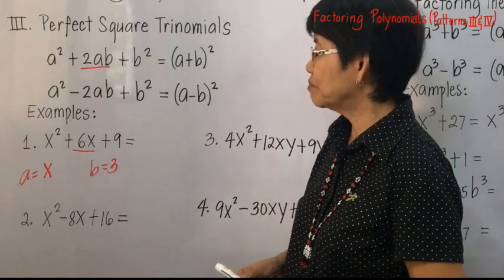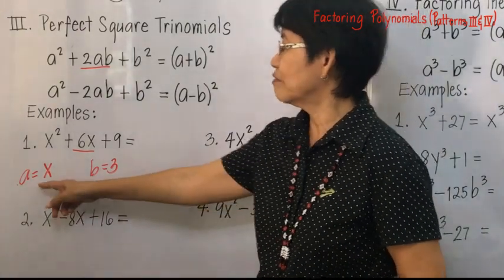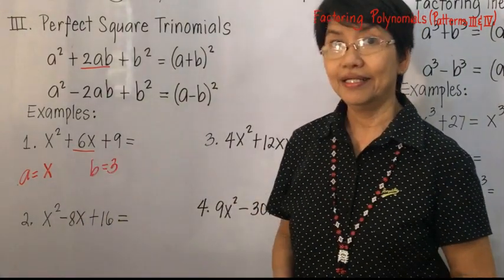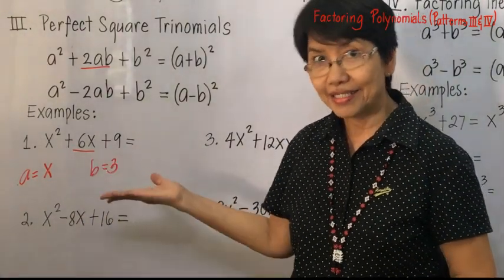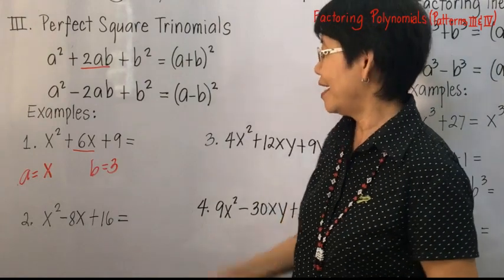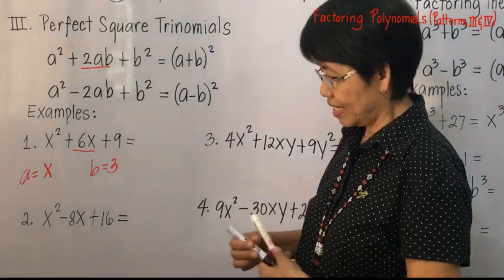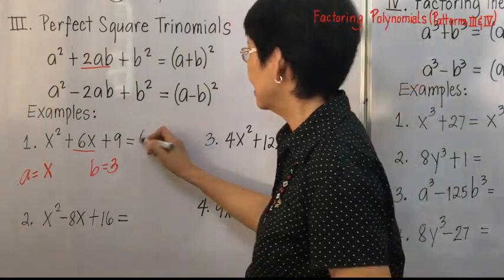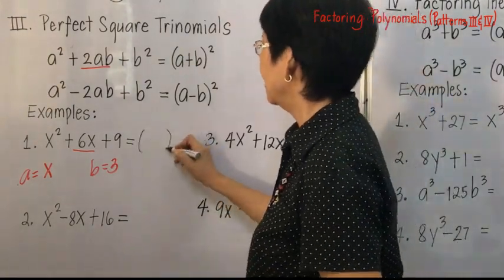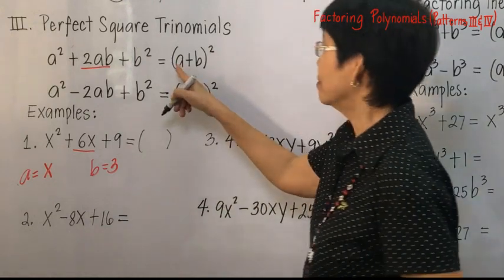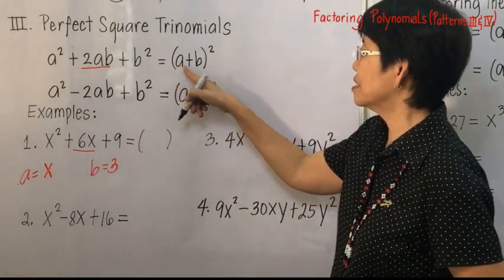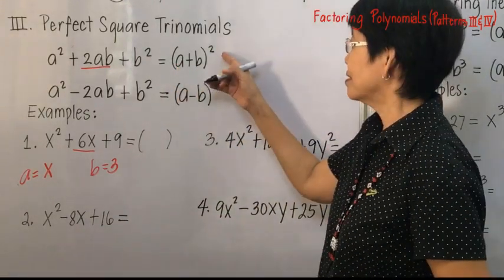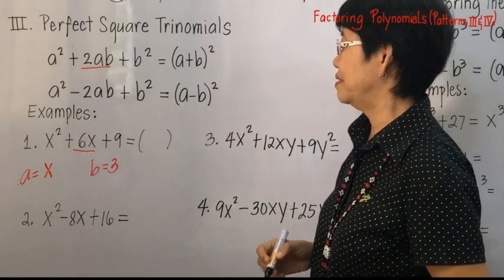So if we can derive the middle term from that product, then it is a perfect square trinomial. The answer is: take the square root of the first term plus the square root of the last term, quantity squared.